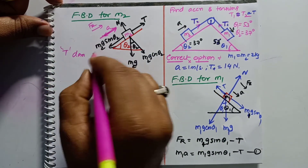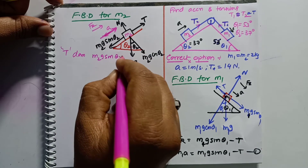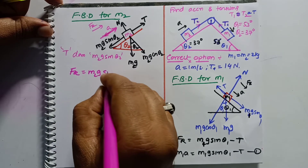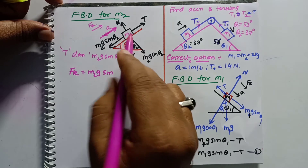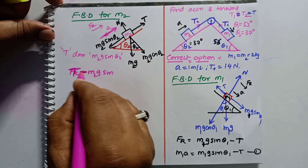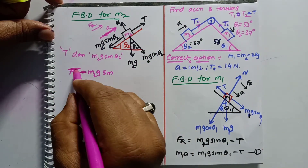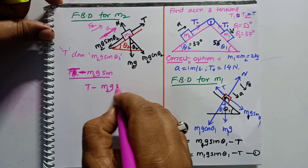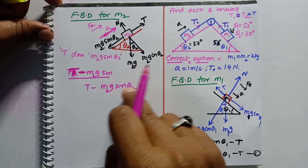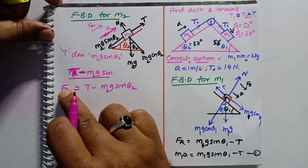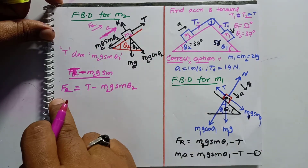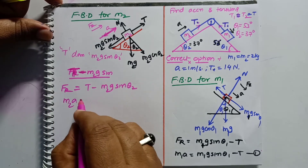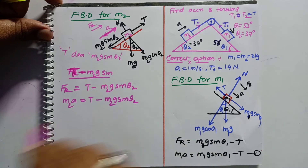Since T dominates m2·g·sinθ2, the resultant force is T − m2·g·sinθ2. According to Newton's second law, the resultant force equals m2·a. Therefore we write: T − m2·g·sinθ2 = m2·a. This is equation number 2.